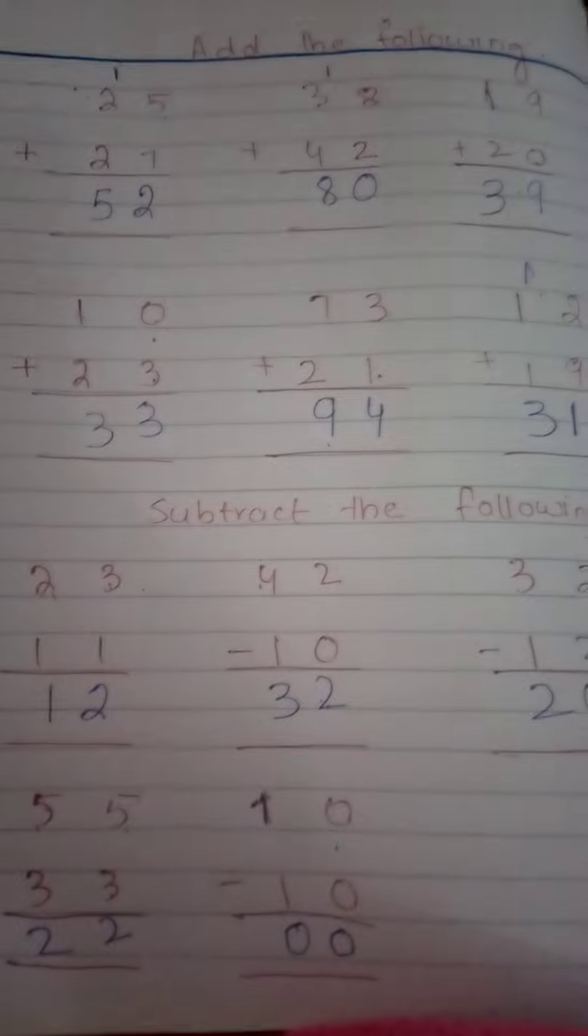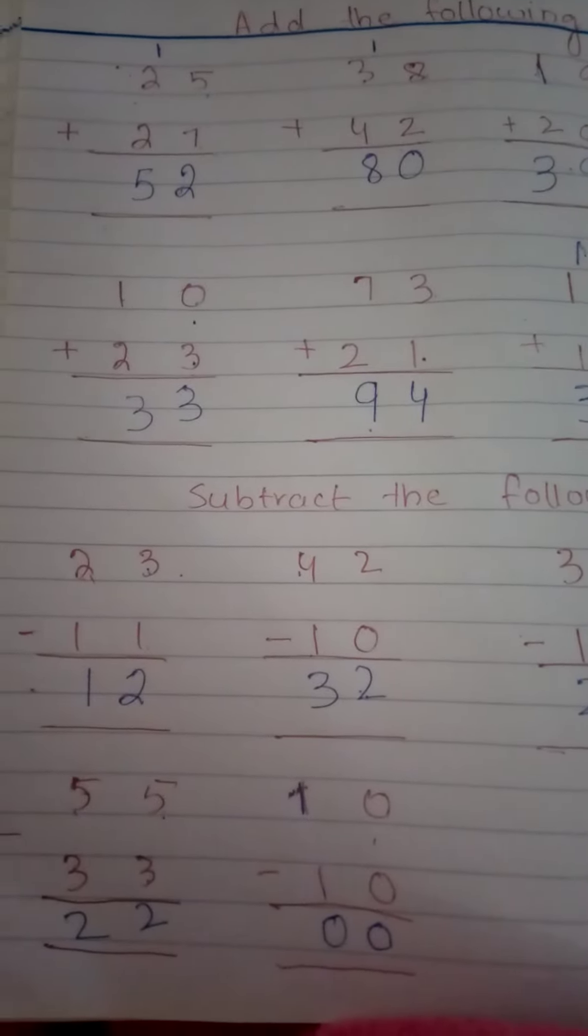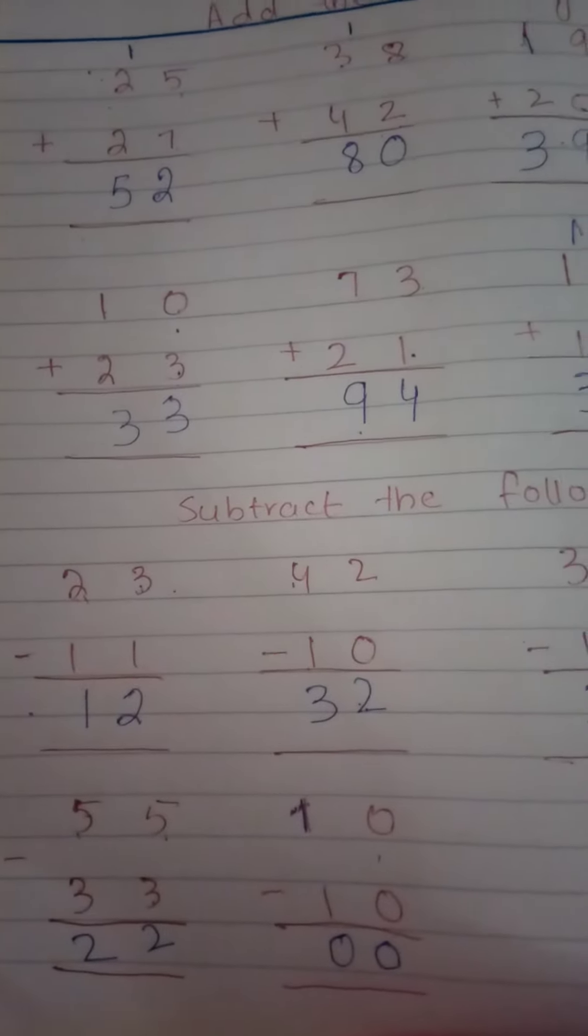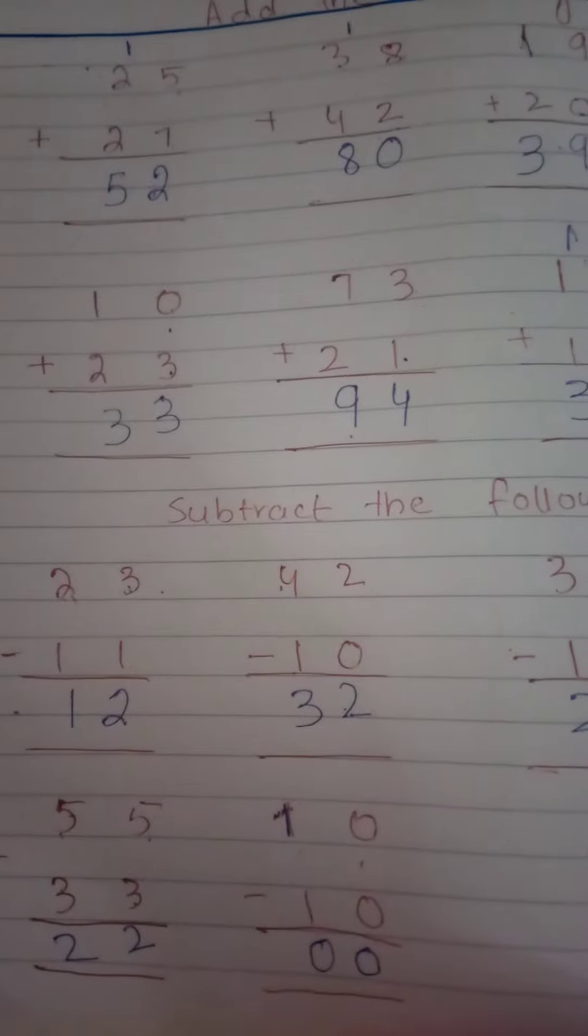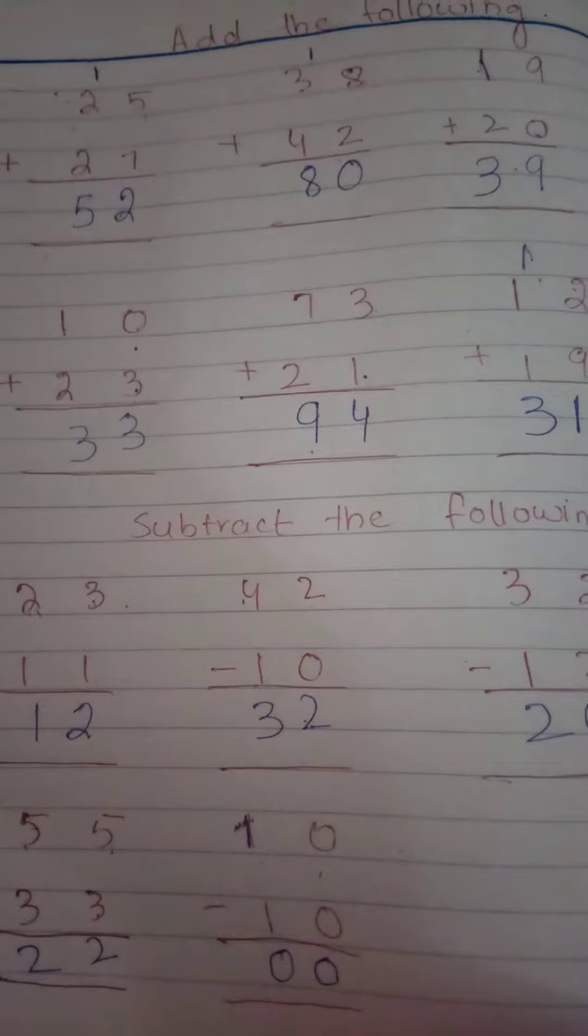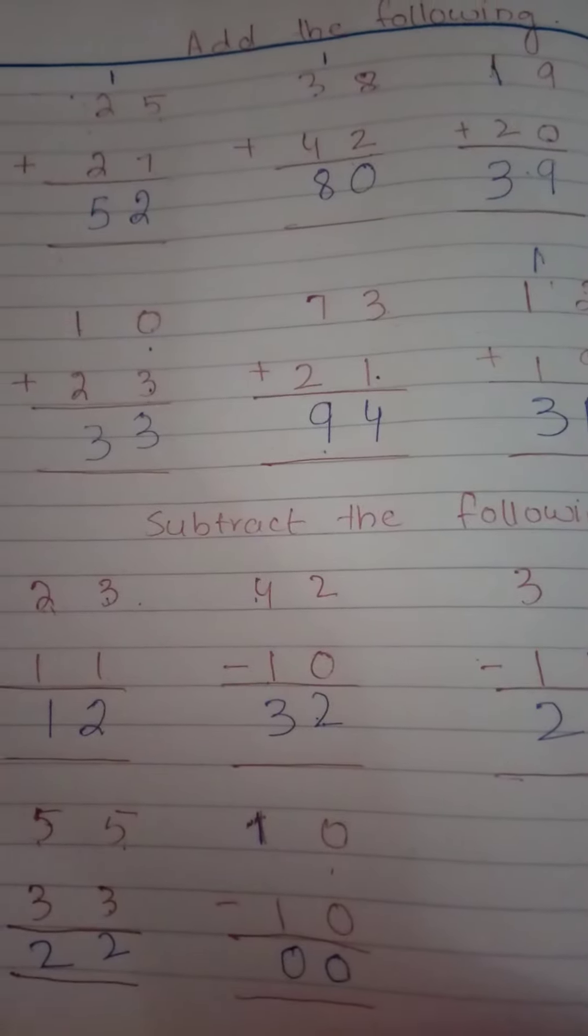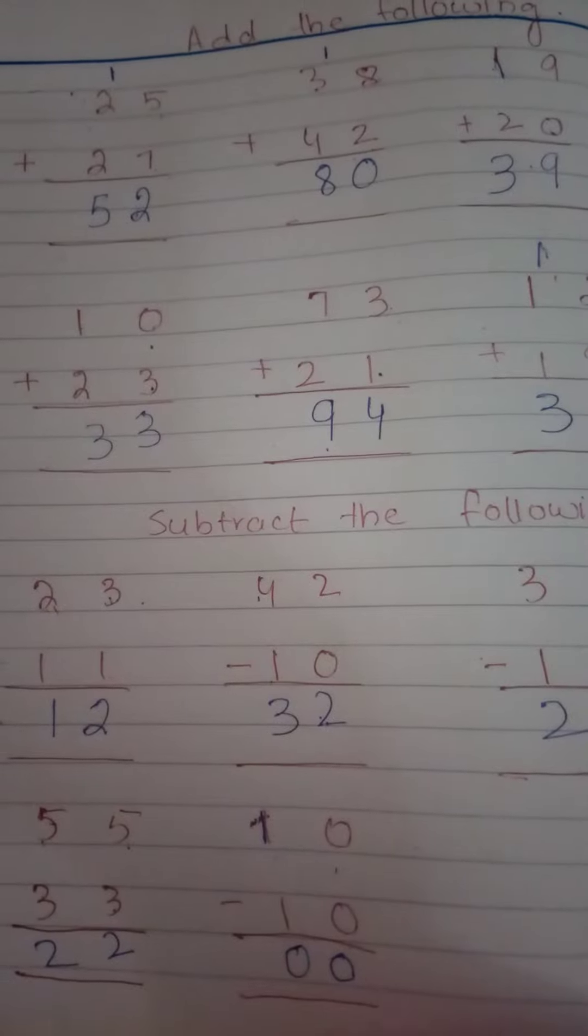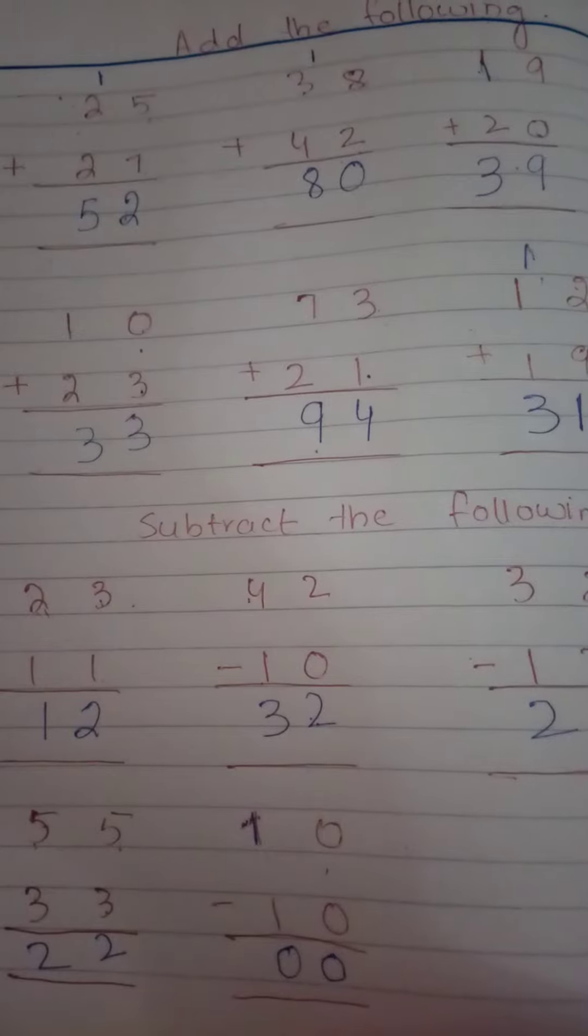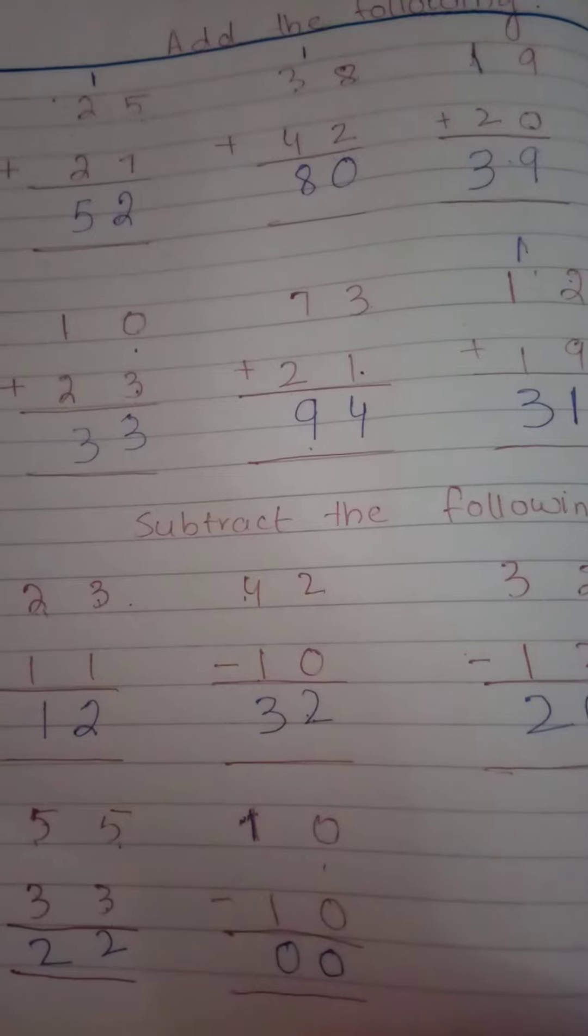Add the following sums. Number one: 25 plus 27, the answer is 52. Number two: 38 plus 42, answer is 80. Number three: 19 plus 20, answer is 39. Number four: 10 plus 23, answer is 33. Number five: 73 plus 21, answer is 94. Number six: 12 plus 19, answer is 31.